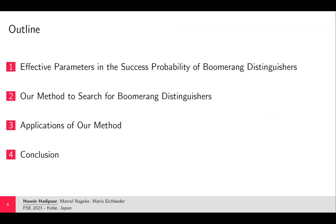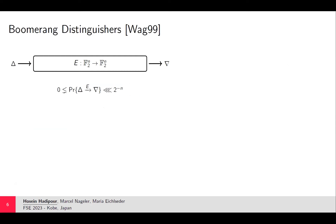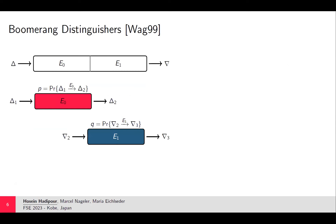My plan for this talk: first I will explain which parameters are effective in the success probability of boomerang distinguishers, then I will show how to create a constraint programming model to account for these parameters and find a nearly optimal boomerang distinguisher, and finally I will discuss one application of our tool to WARP.